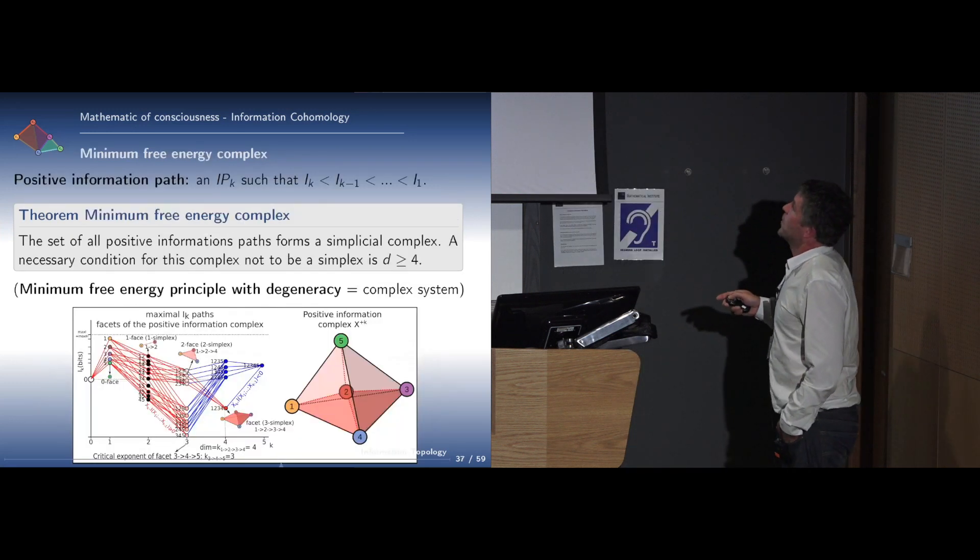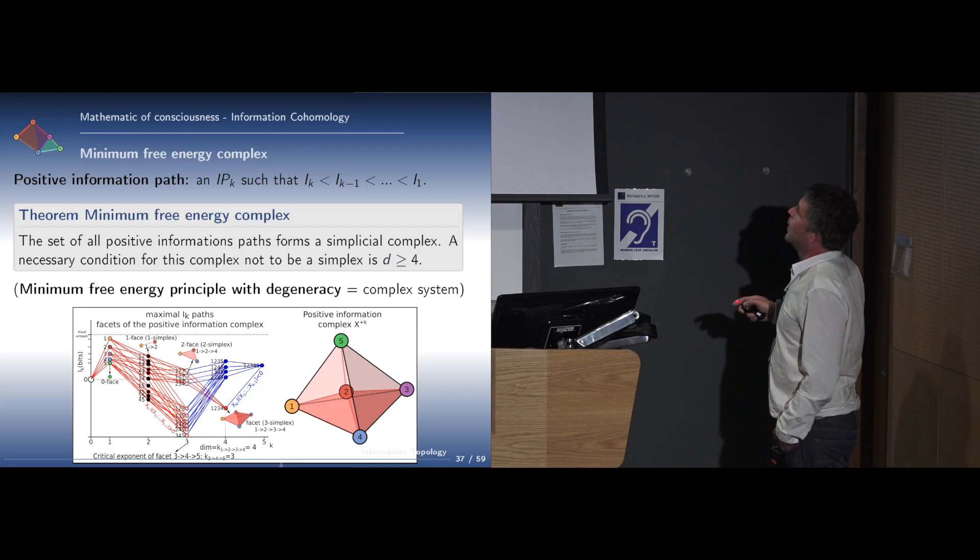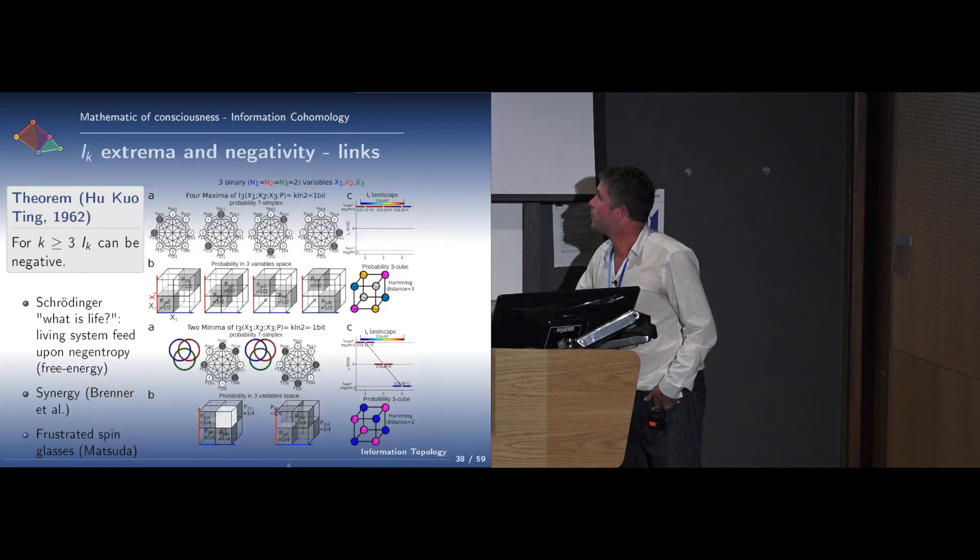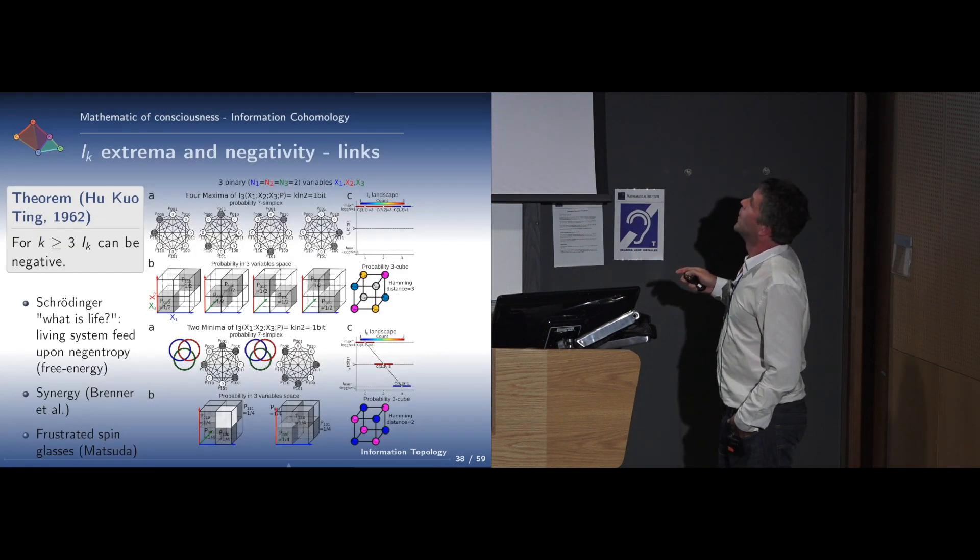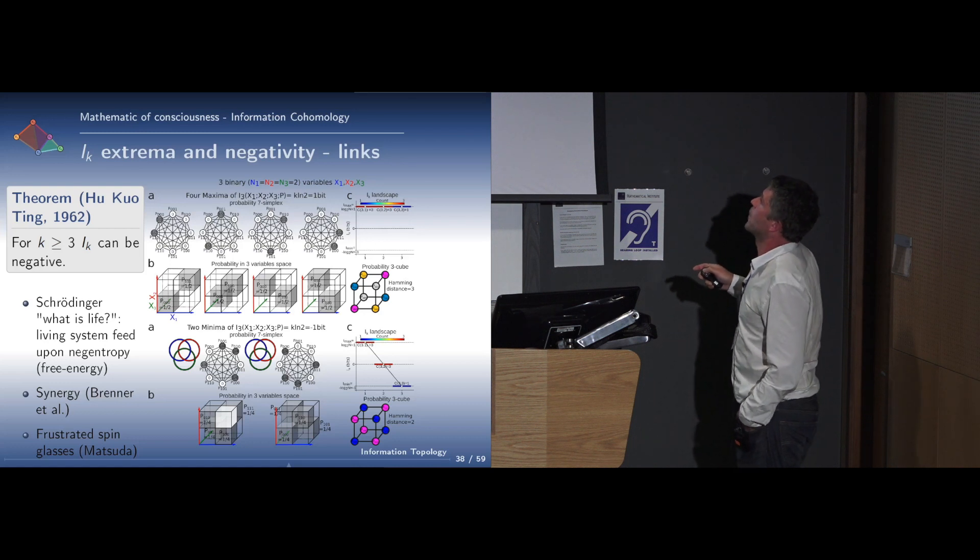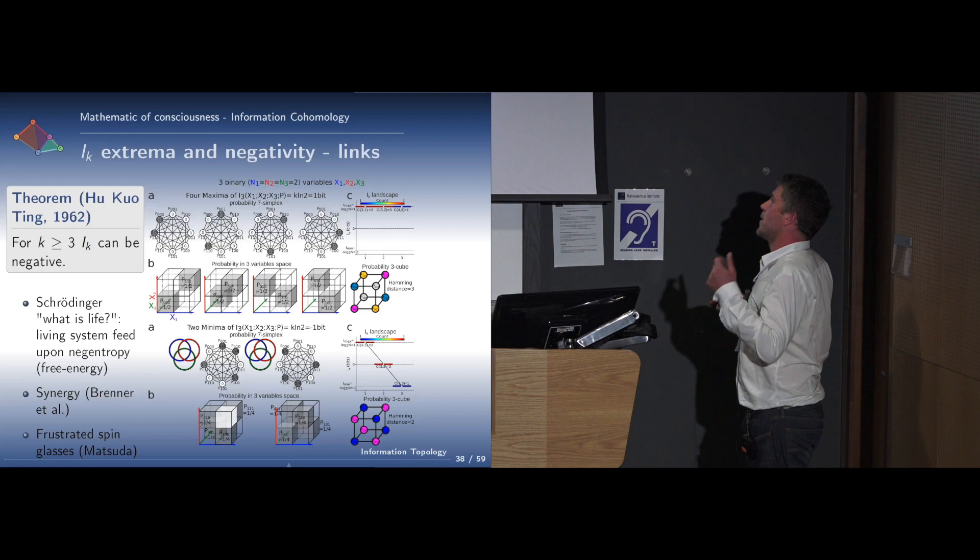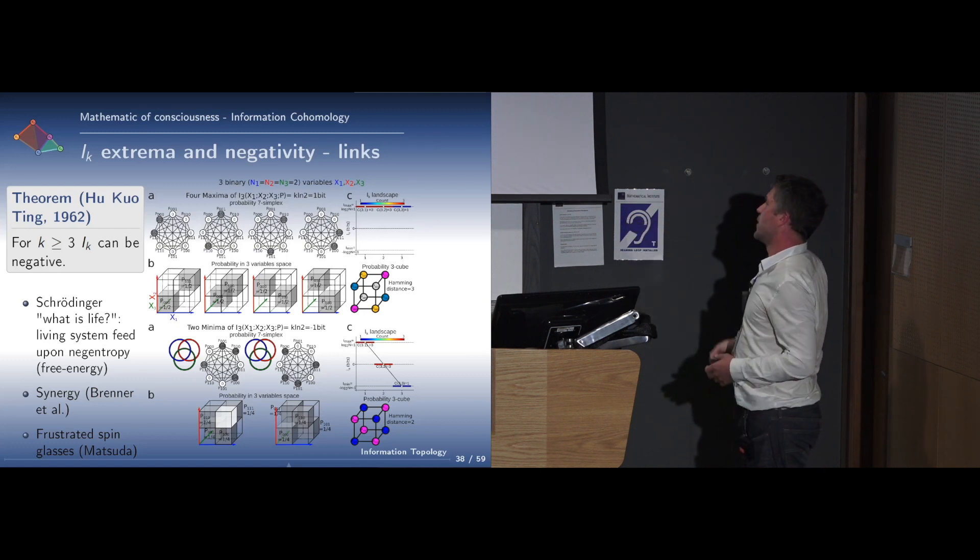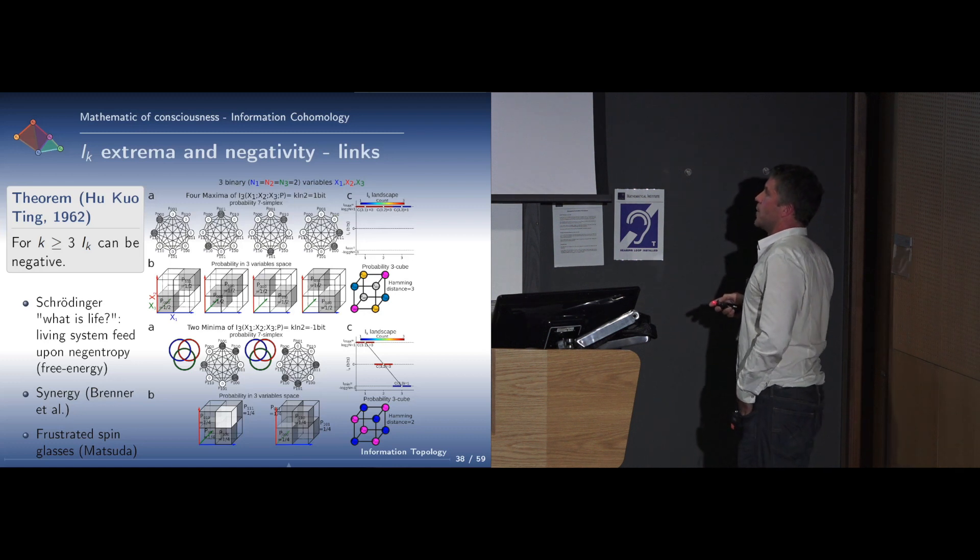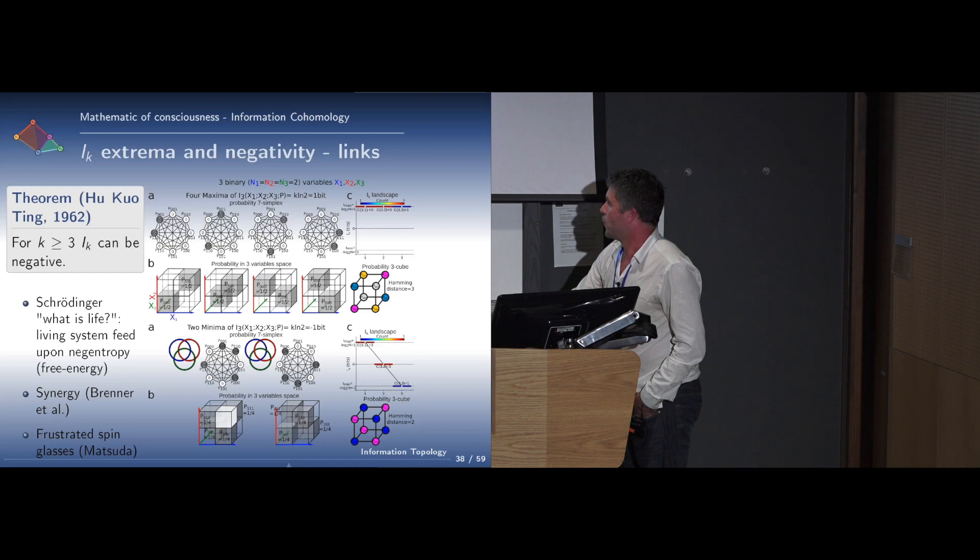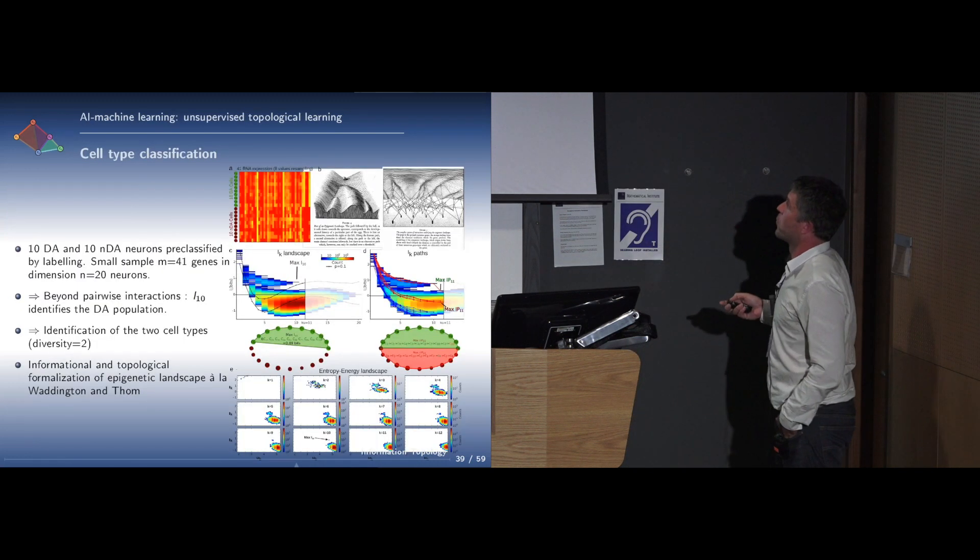We can also conjecture that there exists a discrete informational version of Noether's theorem, which would correspond to the first law. We define positive information paths as strictly decreasing paths of mutual information, and this set of paths forms a simplicial complex, which we call the minimum free energy complex. There is a nice phenomenon which is negativity of mutual information for degrees higher than two. For example, if you take three binary random variables, they give a seven-dimensional simplex, and there are two minima in this simplex where the variables are pairwise independent, but they are linked three by three by minus one mutual information. This is a purely high-dimensional effect. We propose to make it as topological links like Borromean links.